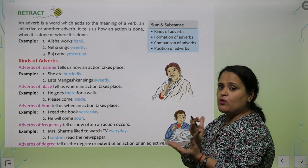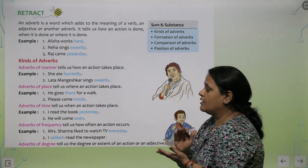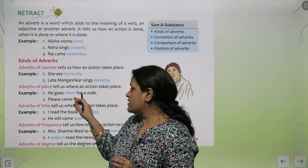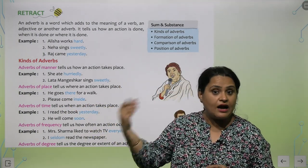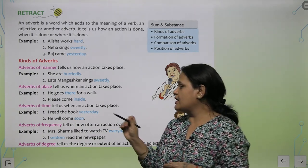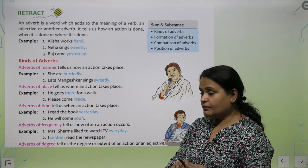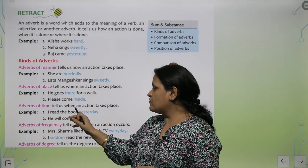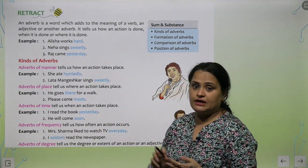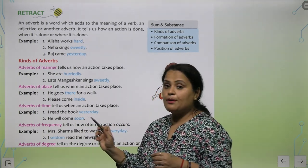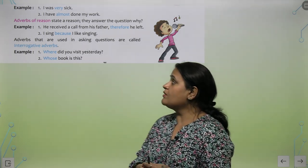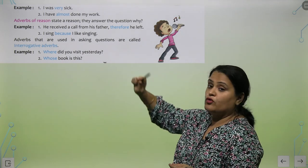Adverbs of place - where an action takes place. You will get the answer of where. For example, he goes there for a walk. Where does he go? There. Please come inside - where should you come? Inside. Next is time. When an action takes place. I read the book yesterday - when did you read? Yesterday. He will come soon - when will he come? Soon.